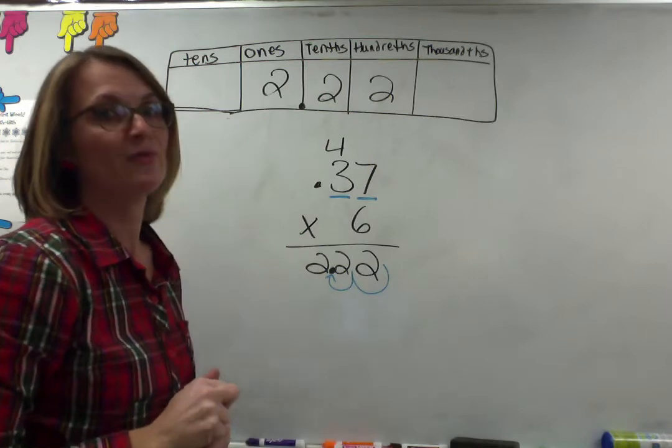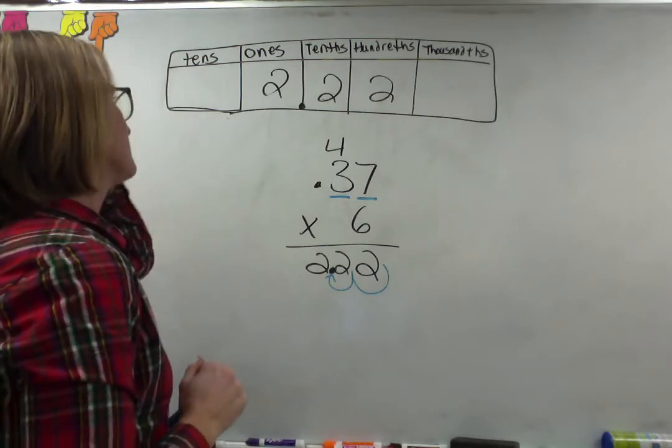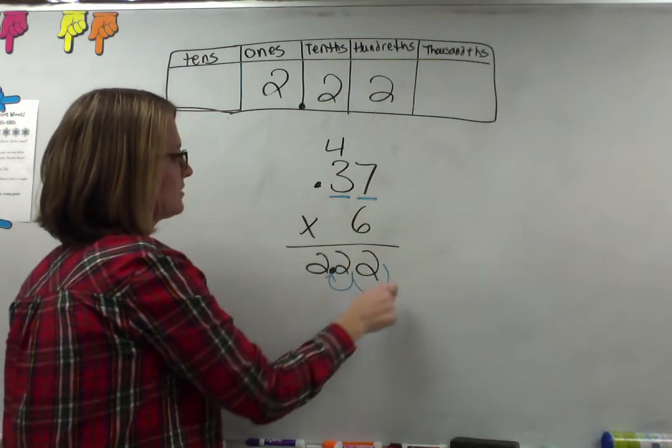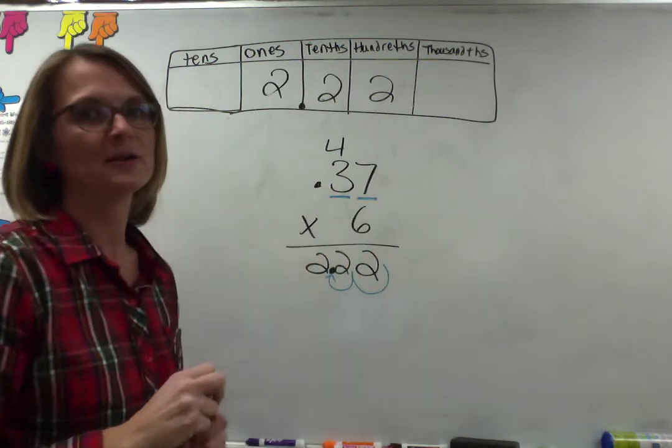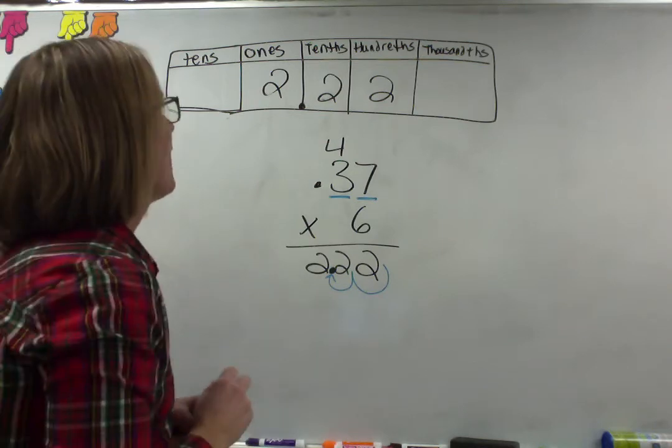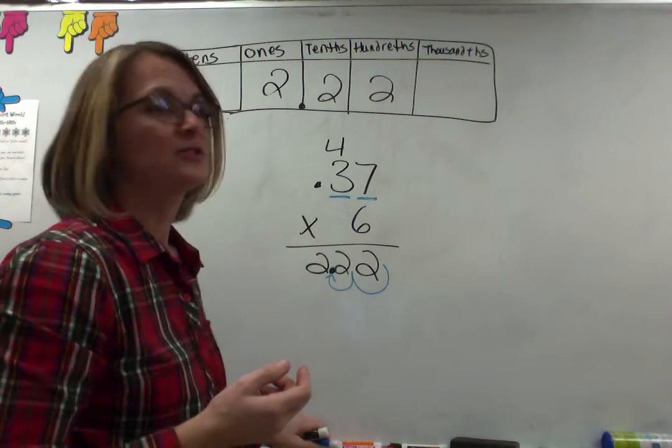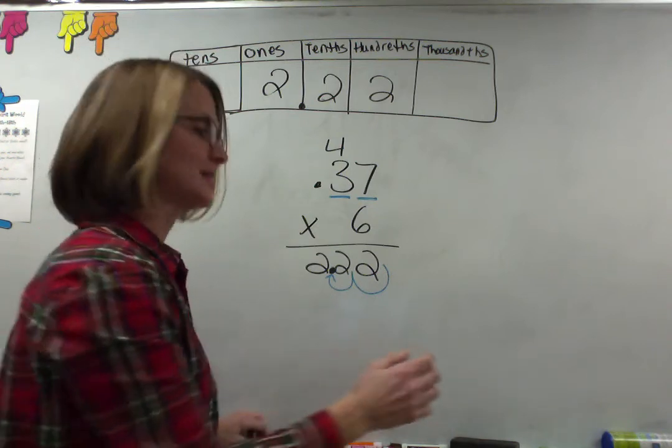You have 2 and 22 hundredths which makes sense because you're multiplying hundredths. So there's a hundredths place here so then there's a hundredths place in your answer. That is pretty much it. You're just going to multiply like normal but you're going to pay attention to the decimal.